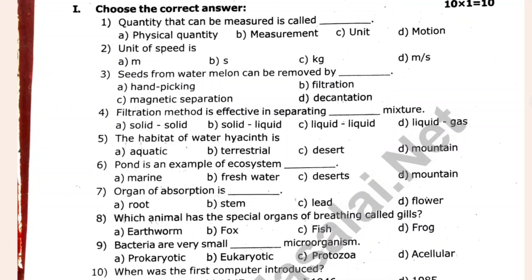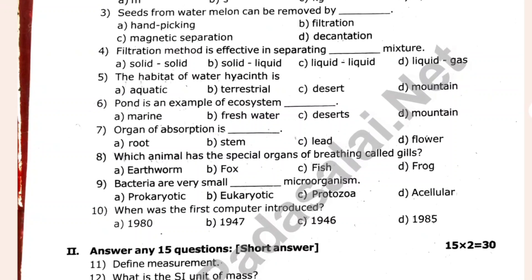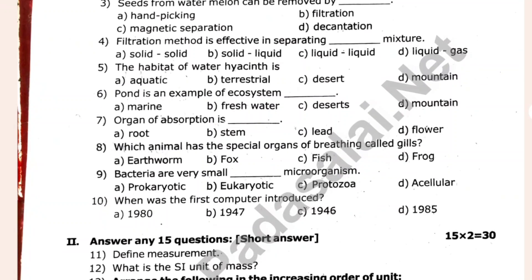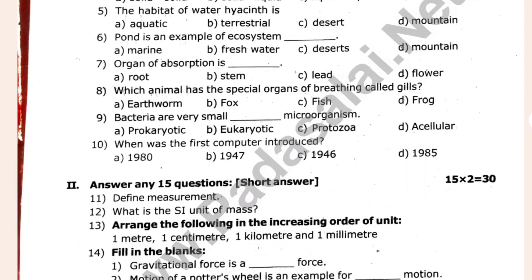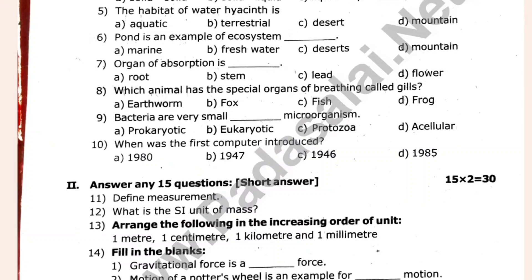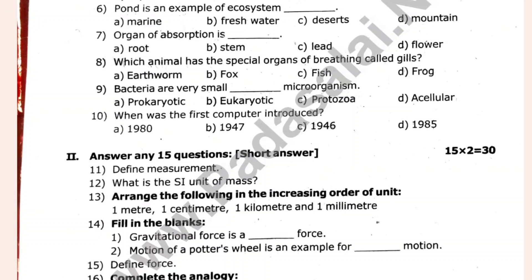The quantity that can be measured is called as [blank]. The unit of speed is [blank]. Seeds from watermelon can be removed by [blank]. Filtration method is effective in separating [blank] mixture. The habitat of water hyacinth is [blank]. Pond is an example of ecosystem [blank]. Organ of observation is [blank]. Which animal has a separate organ of breathing called gills? Bacteria are very small [blank] — micro-organism.